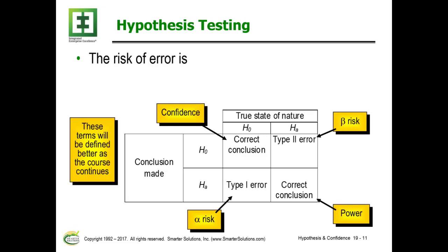This table describes what alpha risk and beta risk are — type 1 error is alpha, and type 2 error is beta. We make a conclusion that could be right or wrong, and that depends on the alpha or beta value. The beta value is dependent on the sample size. If we have a significant alpha value, there is only a certain alpha risk of being wrong. If it's not significant, we have to look at the beta risk, which decreases as sample size increases.